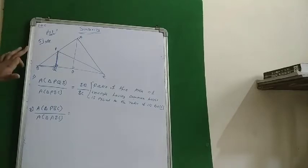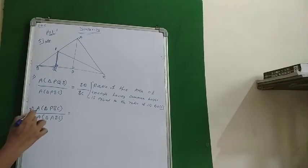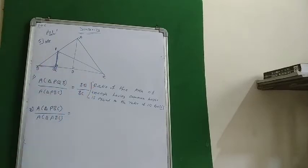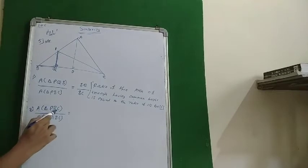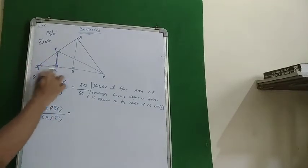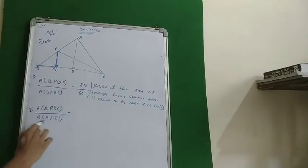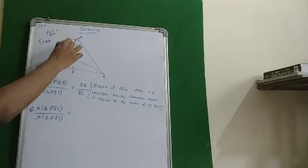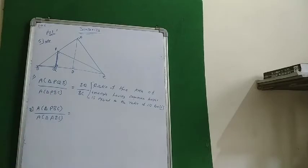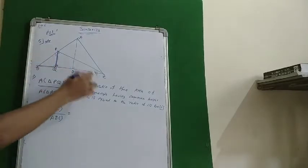We will start with the second part of the question. What is the ratio of area of triangle PBC? Before starting the question, we will see what is the height and what is the base of each triangle. The height of triangle PBC is PQ and the base is BC. In triangle ABC, AD is the height and BC is the base.